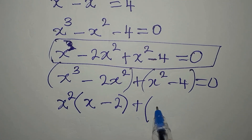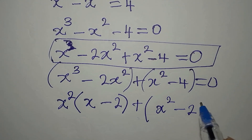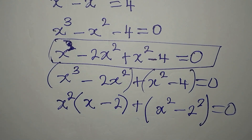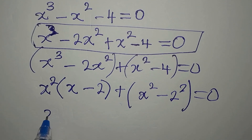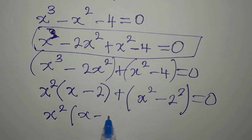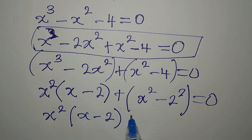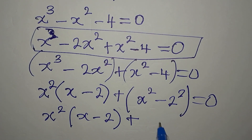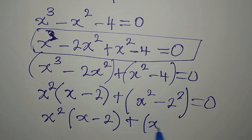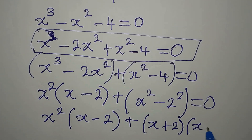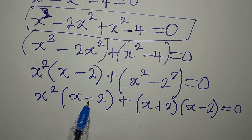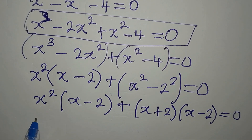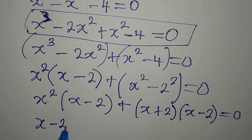On this side we have x squared minus 2 squared, so we can apply difference of two squares. That gives x squared times (x minus 2), then plus (x plus 2)(x minus 2), and everything equals zero. There is something common — we have x minus 2 here and x minus 2 there, so x minus 2 is the common factor we factorize out.